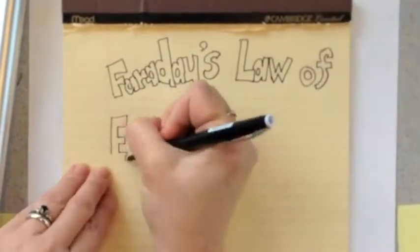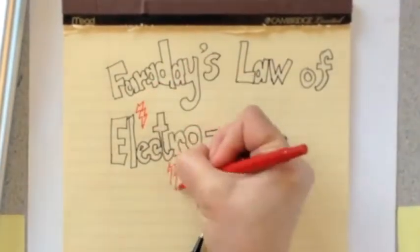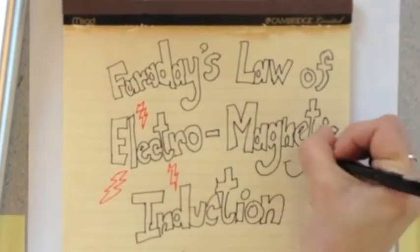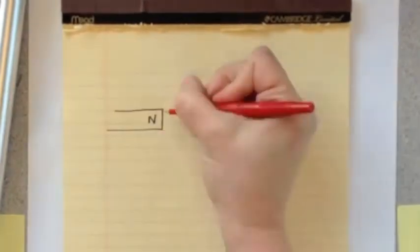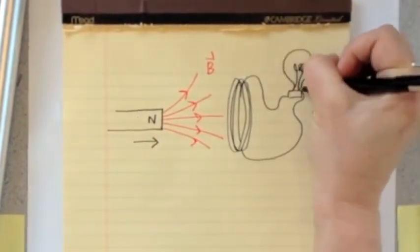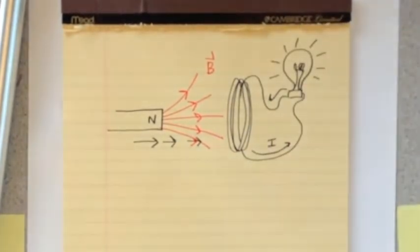This is a physics doodle about Faraday's law of electromagnetic induction. Michael Faraday discovered that if the magnetic flux through a coil of wire changes with time, then a current will be induced in the coil.